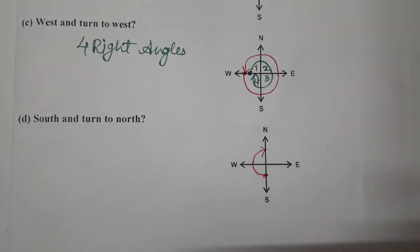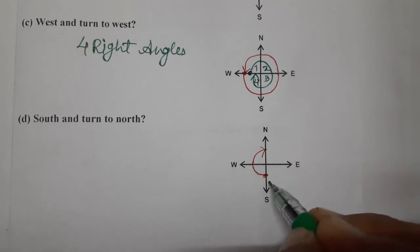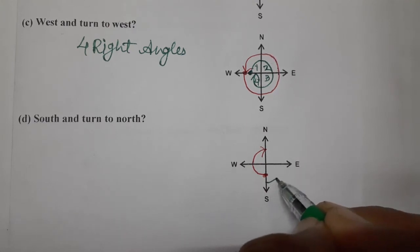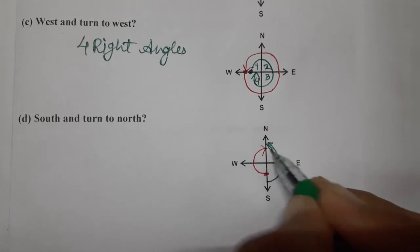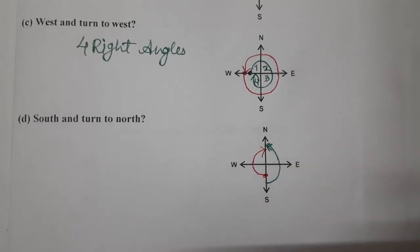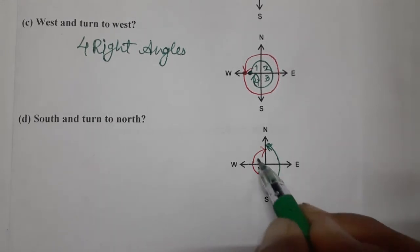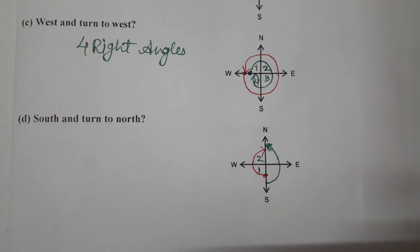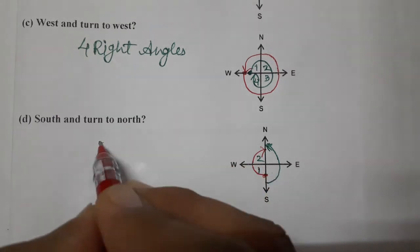And if we reverse the direction, that means anti-clockwise south to north, then also we are at north only. So one, two right angles. So both are same, two right angles.